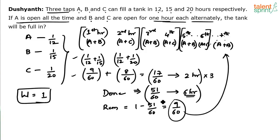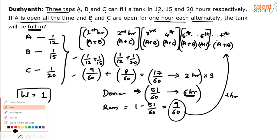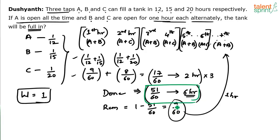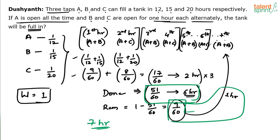The remaining 3/20 (i.e., 9/60) is done by A and B in the 7th hour. So the total time required is 6 hours plus 1 hour — the tank will be full in 7 hours.